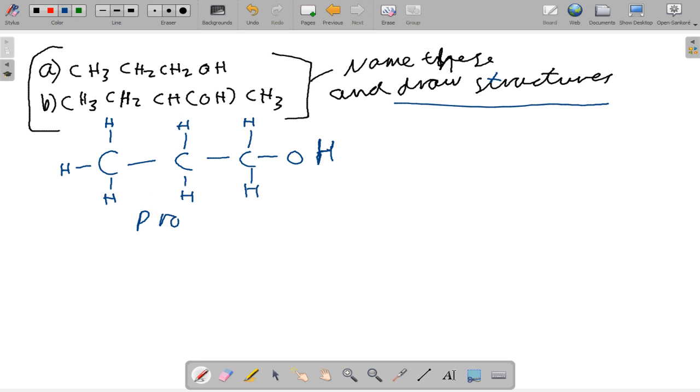So this would be propanol. One, two, three carbons and OH here. There are no alkyl groups so it makes our job a bit easier. We can just say prop, and this is propanol. It has got three carbon atoms.